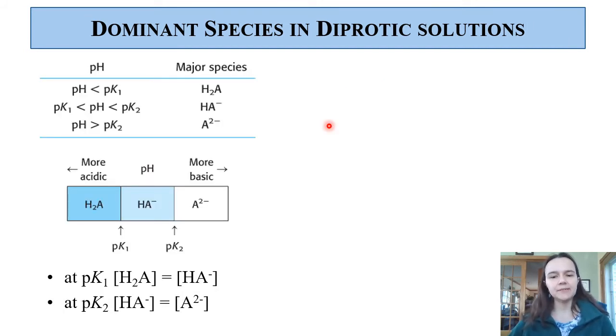Dominant species in diprotic solutions. This is a summary of what we just discussed. When pH is less than the first pKa, we have the fully acidic species. When pH is in between the two pKa values, you have the intermediate form of the acid. And when the pH is higher than the last pKa value, you have the fully basic form.